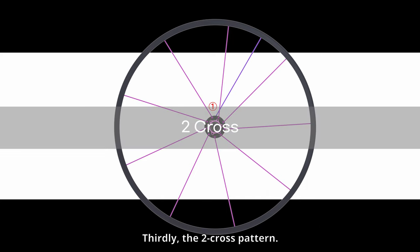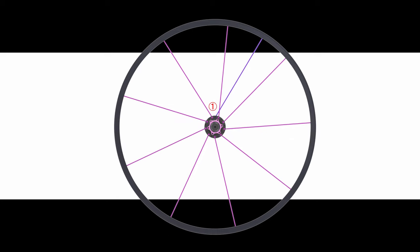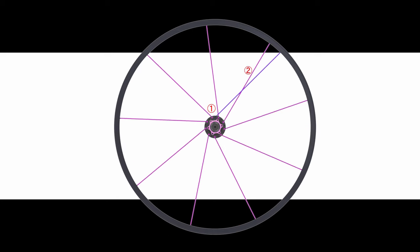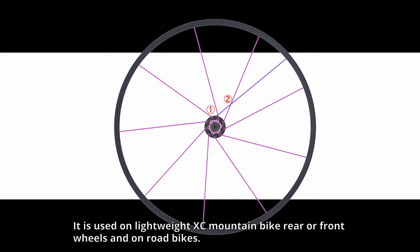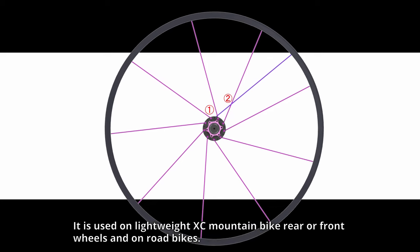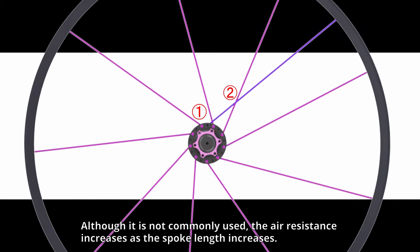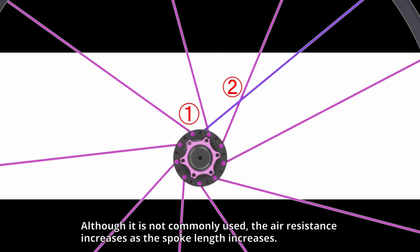Thirdly, the two-cross pattern. It is used on lightweight XC mountain bike rear or front wheels and on road bikes. Although it is not commonly used, the air resistance increases as the spoke length increases.